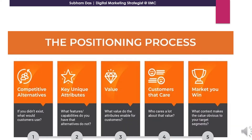Here I have listed the top five points that I need to consider while doing a product positioning process. The first thing is: who are the competitors and what are they already offering? The second point is the key attributes of my product or service. The third point is the value I am offering to the target customers and their needs.